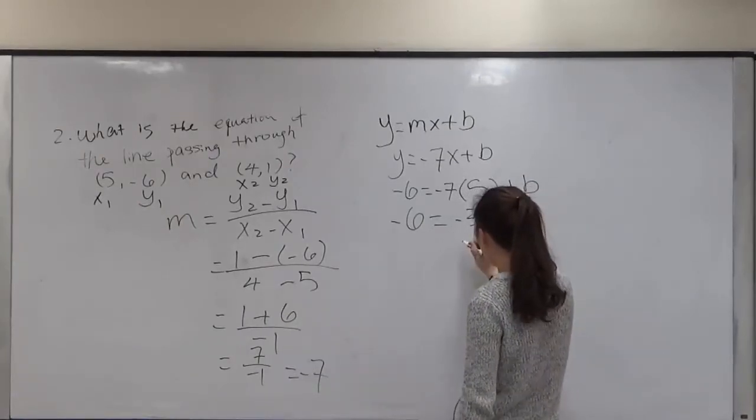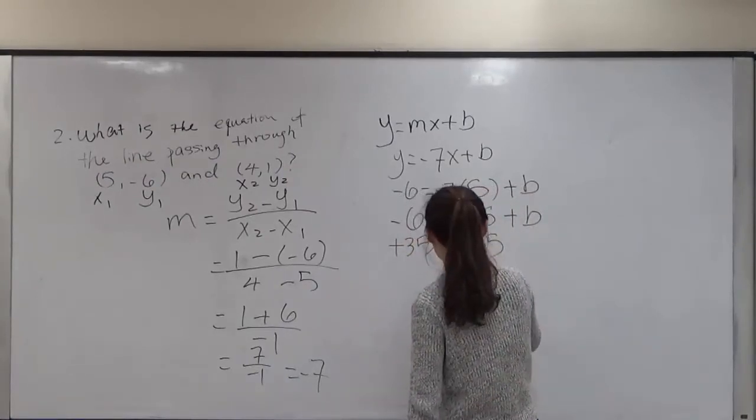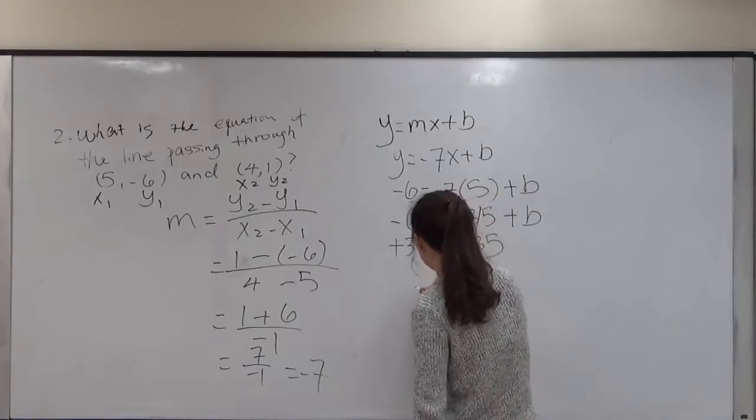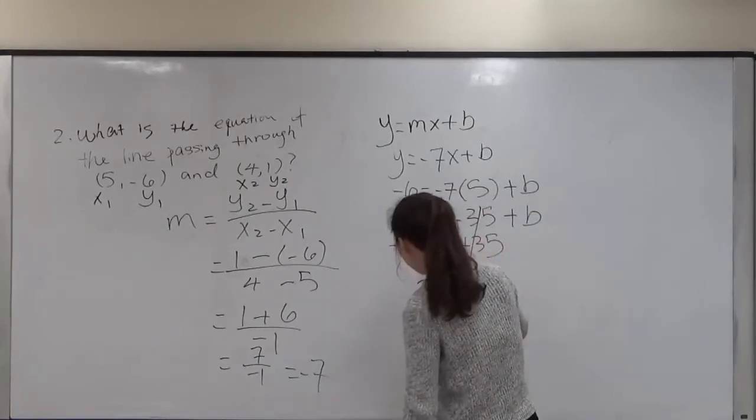Solve for b, add 35. b equals positive 29.